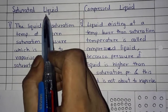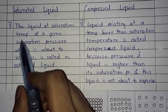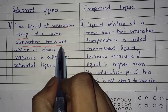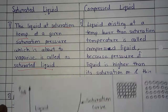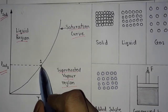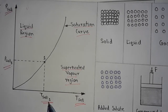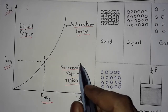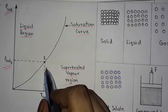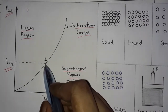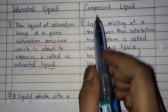First, in saturated liquid: the liquid at saturation temperature at a given saturation pressure which is about to vaporize is called a saturated liquid. This point is at saturation pressure and saturation temperature, and it is about to vaporize. It is on the saturation curve, so this point is called the saturated liquid point.